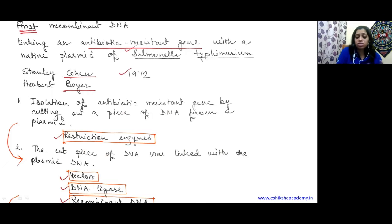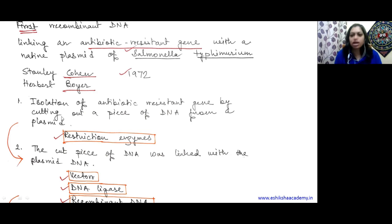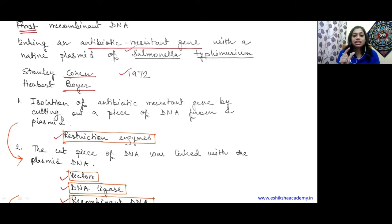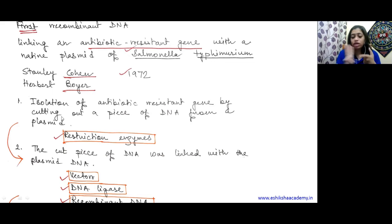The second step: the cut piece of DNA - the antibiotic-resistant gene - is linked with another plasmid DNA. Not the same plasmid it was cut from - that is of no use - but another plasmid DNA. This other plasmid DNA is now called a vector. In general, 'vector' means carrier - just as in malaria, the female Anopheles mosquito is the vector because it carries the pathogen to humans. Similarly, in recombinant DNA technology or biotechnology, vectors are carriers of your gene of interest.